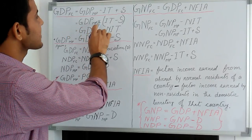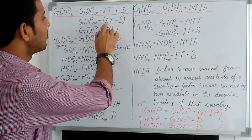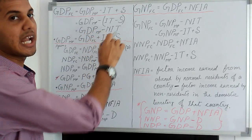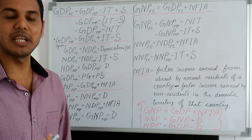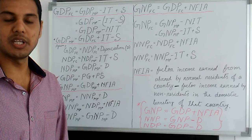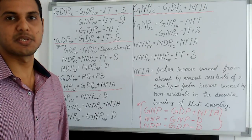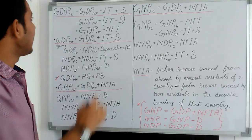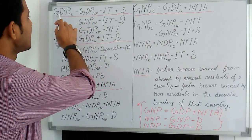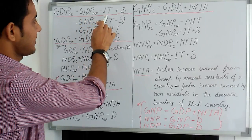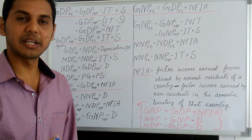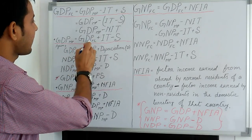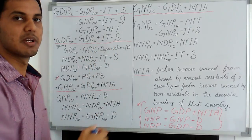So GDP at factor cost equals GDP at market price minus (IT minus S), which equals GDP at market price minus NIT, where NIT denotes net indirect taxes. The difference between indirect taxes and subsidies is called net indirect taxes. Rearranging this formula, GDP at market price equals GDP at factor cost plus indirect taxes minus subsidies.